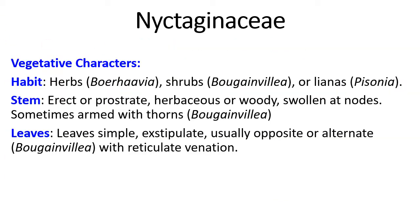Here we will learn the vegetative characters of family Nyctaginaceae. Plants are herbs, shrubs, or lianas. Example of herbs is Boerhavia; example of shrubs is Bougainvillea, which you have seen in the previous slide; example of lianas is Pisonia. The stem is erect or prostrate, herbaceous or woody, varying from species to species, but it is swollen at the nodes.